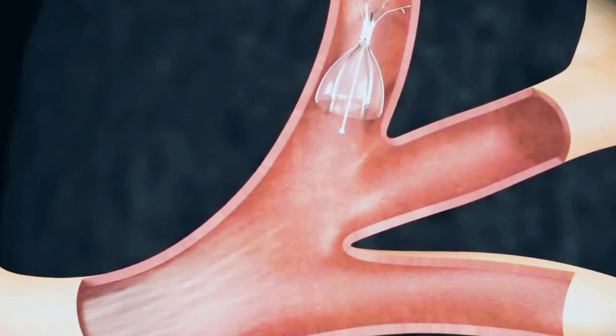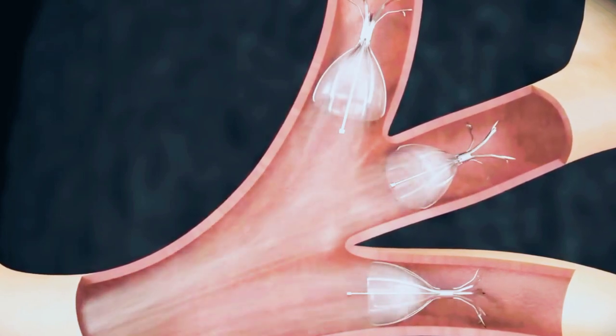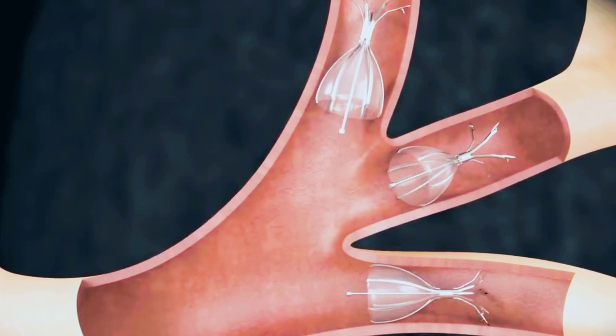Multiple valves will be needed to occlude all the airways leading to a targeted lobe. Air is redirected away from that lobe to healthier tissue.